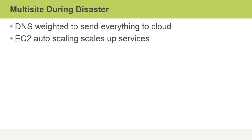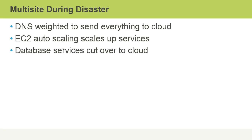EC2 auto-scaling could also be used to add more instances. Database services could also be configured to cut over to the cloud. Often, a lot of this happens through the use of DNS configurations, whereby we redirect the same name to a different IP address in our cloud configuration.